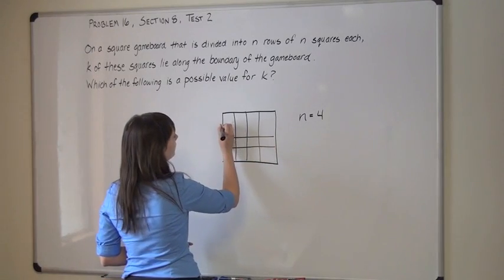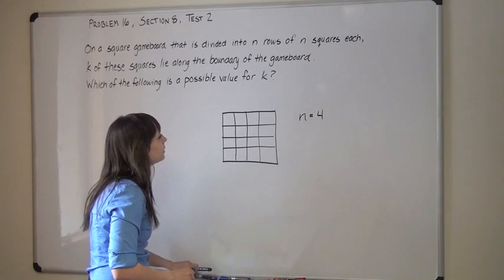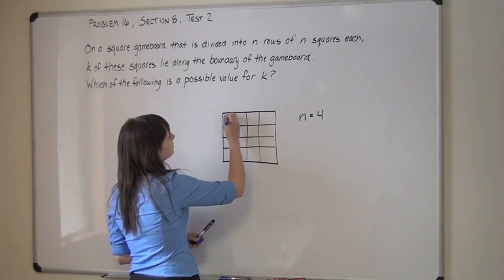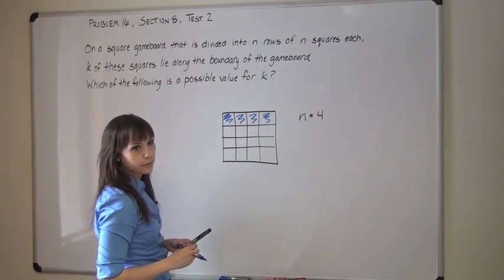So if I want to find out how many of these squares are on the boundary, how many are in k? Let's start by drawing how many of the squares are on this line. One, two, three, four squares are on this upper boundary.